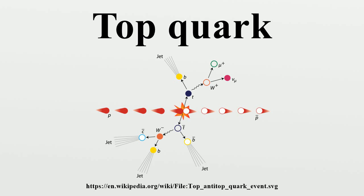It has a mass of 173.34 plus or minus 0.27 plus or minus 0.71 GeV/c², which is about the same mass as an atom of tungsten. The antiparticle of the top quark is the top antiquark, which differs from it only in that some of its properties have equal magnitude but opposite sign.